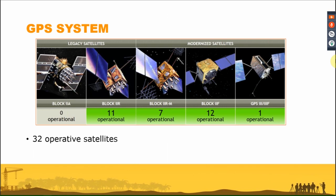The GPS satellite generations include Block II, Block IIA (replenishment), Block IIR, and Block IIRM — modernized satellites with a 7.5-year lifespan launched between 1990 and 2009. Then we have Block IIF, GPS III, and GPS IIIF follow-up satellites with a lifespan between 12 and 15 years, launched from 2010 to now.